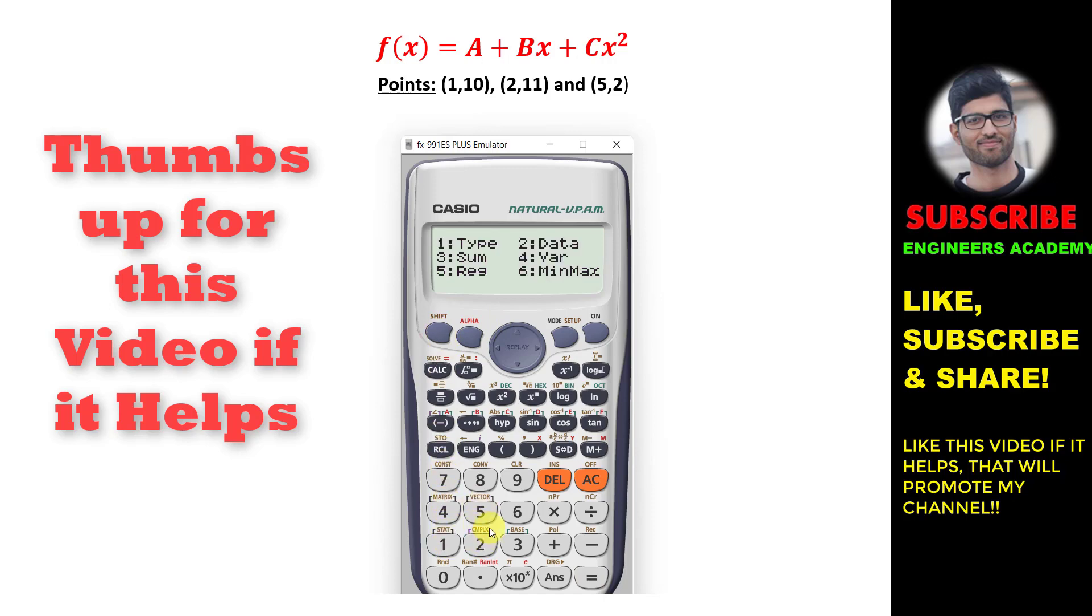So shift, 1, again regression, 2 for B. Equal. B is 4.